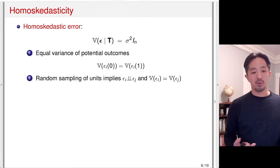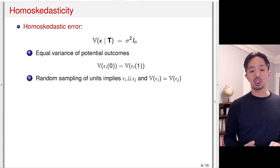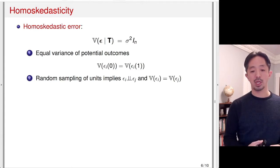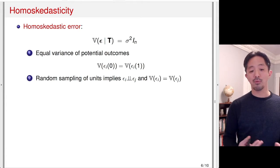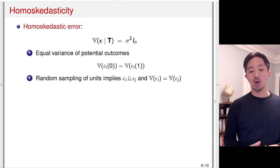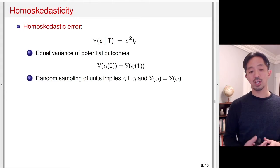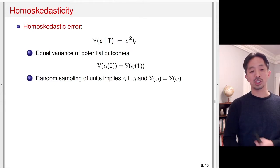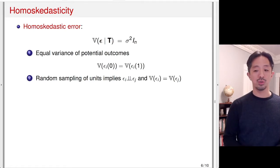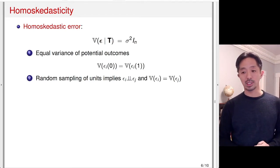The other part of this assumption is guaranteed by the random sampling of units, which implies that the error terms are independent because each unit is randomly sampled from the population. Since units are randomly sampled from the same population, the marginal variances of the error terms are identical — everybody has the same variance and each observation is independent. That's the homoskedastic error assumption and how it relates to the design assumptions.